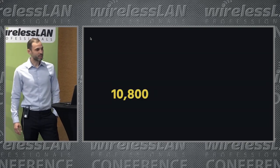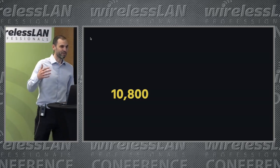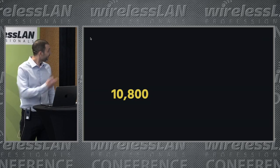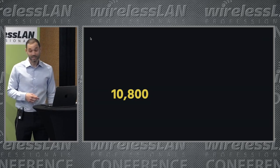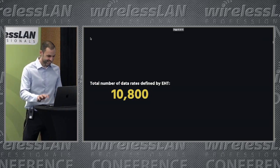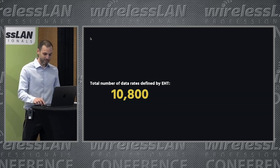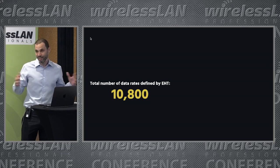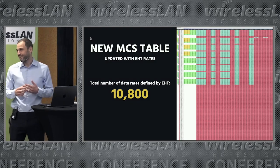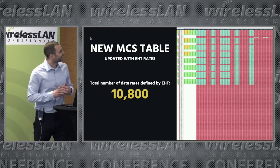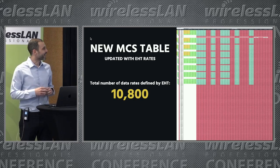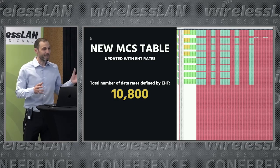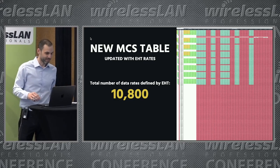When we started to look at EHT, the number of data rates we had with Wi-Fi 6 ended up at around 2,000 something. The new number with EHT is 10,800 — that's the total number of data rates. If we look at the entire MCS table that includes everything, this is what we get. All the red is the new stuff.